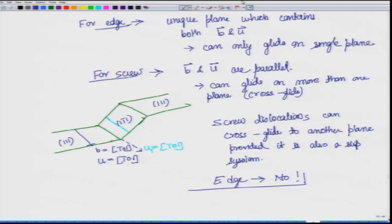We were discussing the glide of different dislocations. For an edge dislocation, the glide plane is defined as the plane containing b and u, and it is unique. Therefore, the edge dislocation cannot move out of that plane by glide — it can move out by climb, but if we are talking only about glide, it cannot move out.